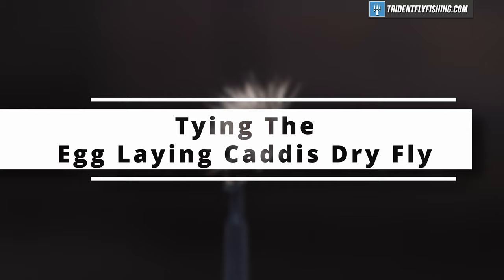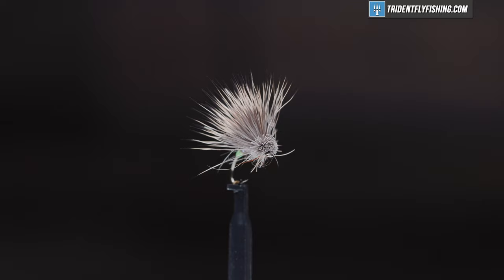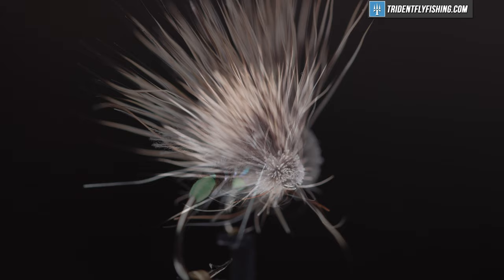Hello, I'm Carl at Trident Fly Fishing. Today we're going to tie the egg laying caddis. There's a number of variations of this fly out there. This one is very similar to one tied by Barry Clark. It's easy to tie, it floats high, and it's great to fish when the female caddis are on the water laying eggs.